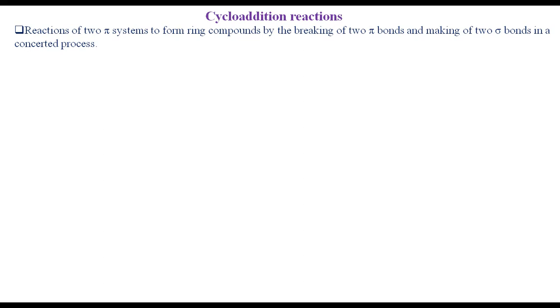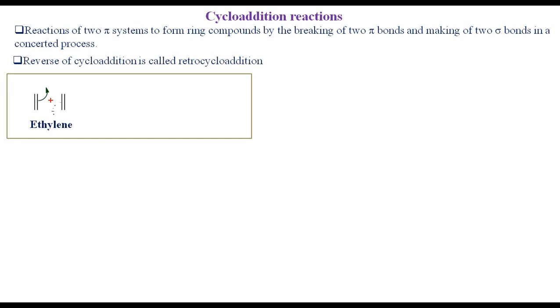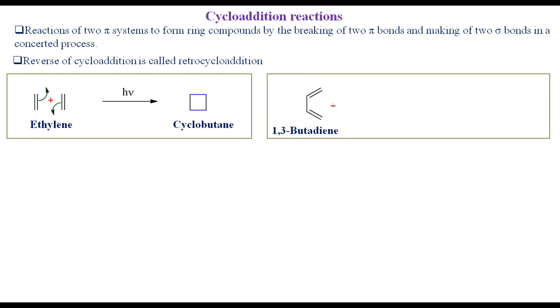Cycloaddition reactions are the most useful pericyclic reactions in organic synthesis. These are reactions of two pi systems to form ring compounds by breaking two pi bonds and making two sigma bonds in a concerted process. The reverse of cycloaddition reactions are known as retro-cycloaddition reactions. Typical examples are the conversion of two molecules of ethylene into cyclobutane, and the reaction of 1,3-butadiene with ethylene to produce cyclohexene.